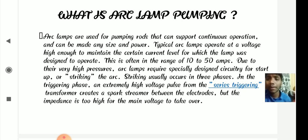They can be made any size and power. Typical arc lamps operate at a voltage high enough to maintain the certain current level for which the lamp was designed to operate. This is often in the range of 10 to 50 amperes. Due to their very high pressure, arc lamps require specially designed circuitry.